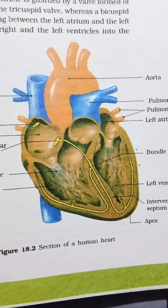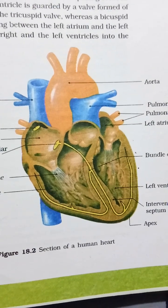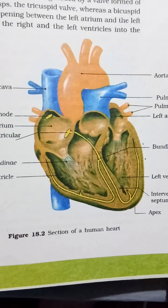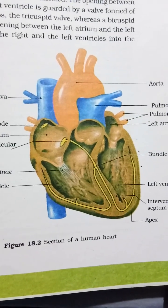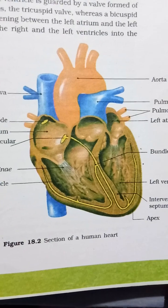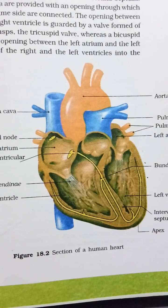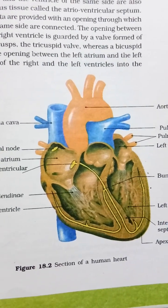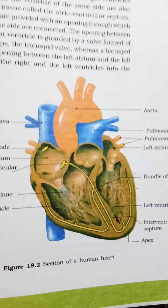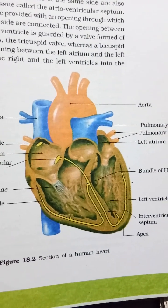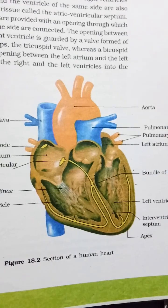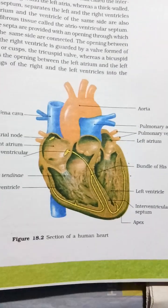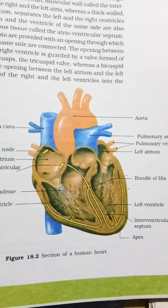Dear biology aspirants, in this section we will discuss the human circulatory system, also called the blood vascular system. It consists of a muscular chambered heart, a network of closed branching blood vessels, and blood, the fluid which is circulated.